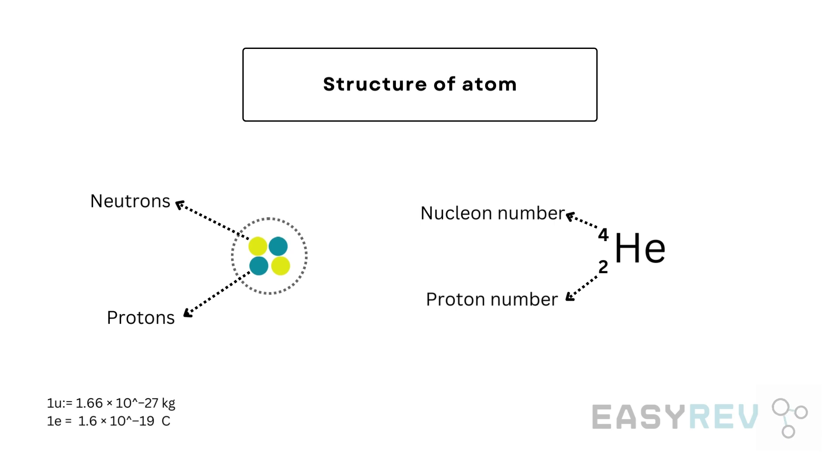It turns out that there is this other version of helium that also exists naturally, and we've presented it over here. Now notice that it has the same symbolic representation He and it has the same proton number two, but the difference here is that its nucleon number is three, not four, which means that this nucleus contains one neutron instead of two.